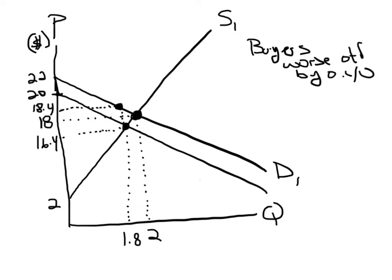Now the sellers, on the other hand, well before they had $18 and now they're getting only 16.4, so they're worse off by $1.60, which is the rest of the $2. So the sellers were worse off by $1.60.